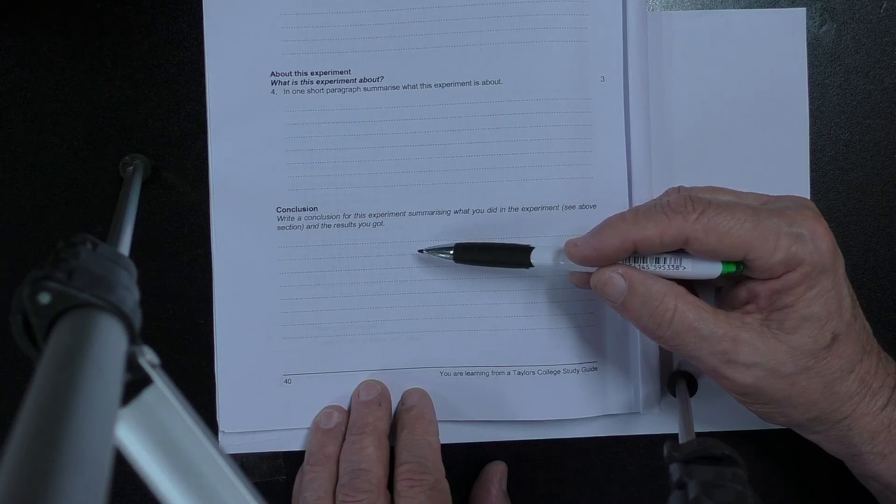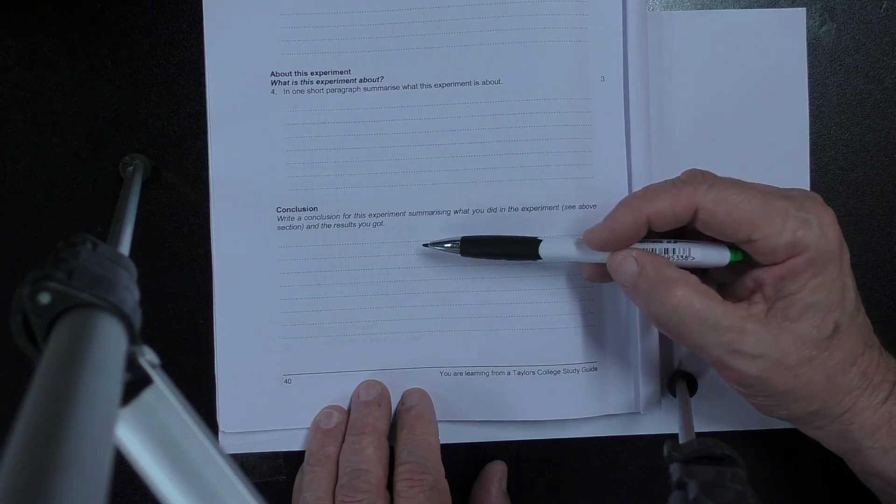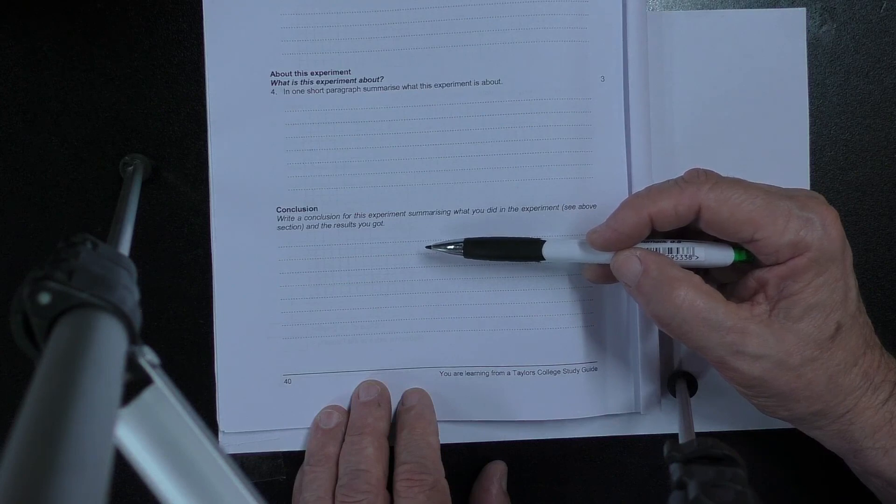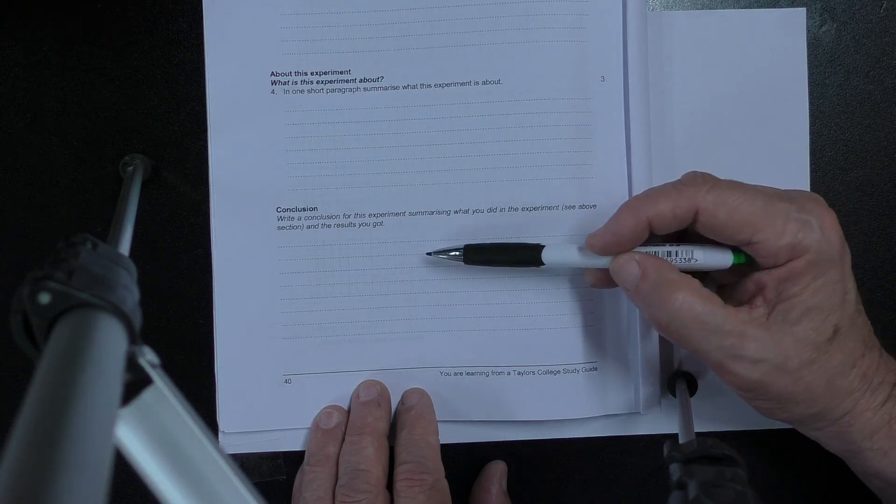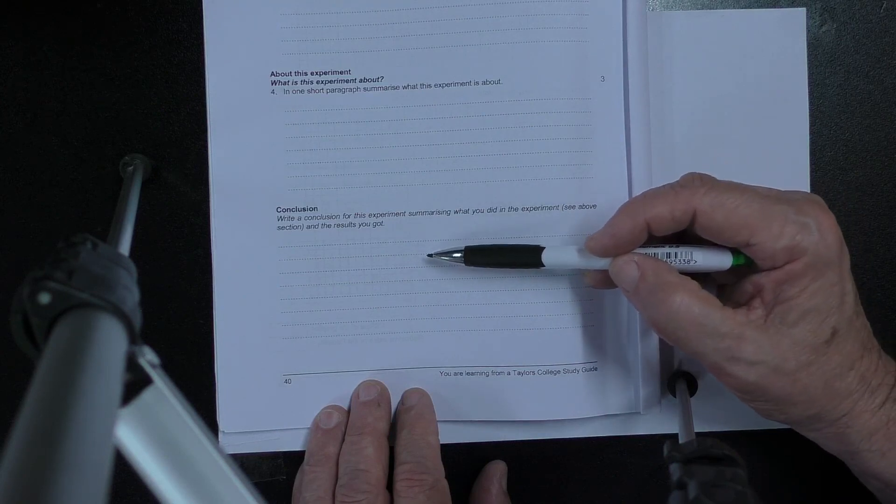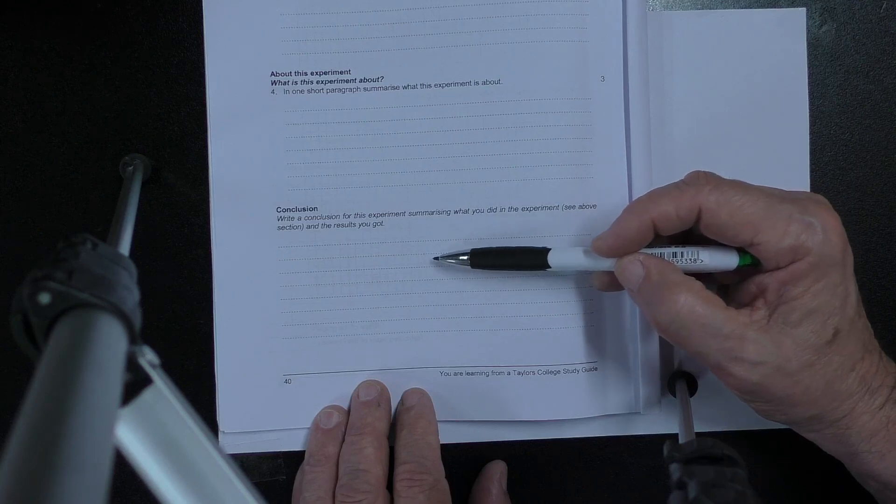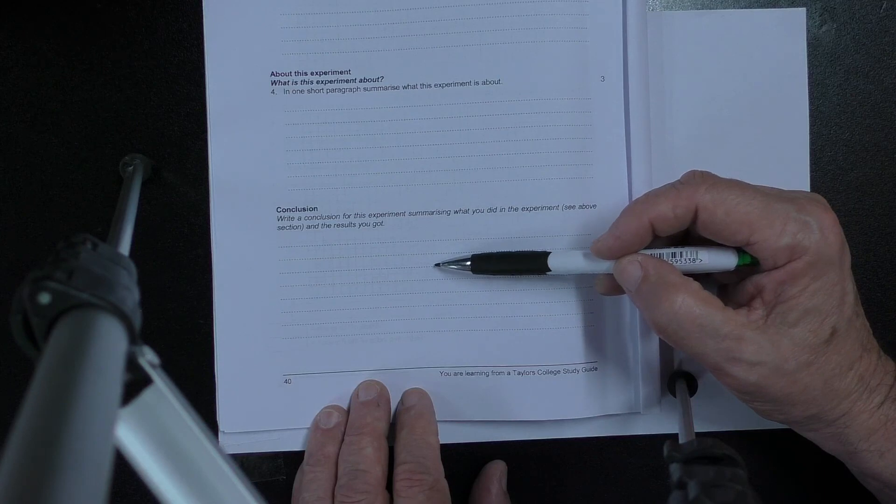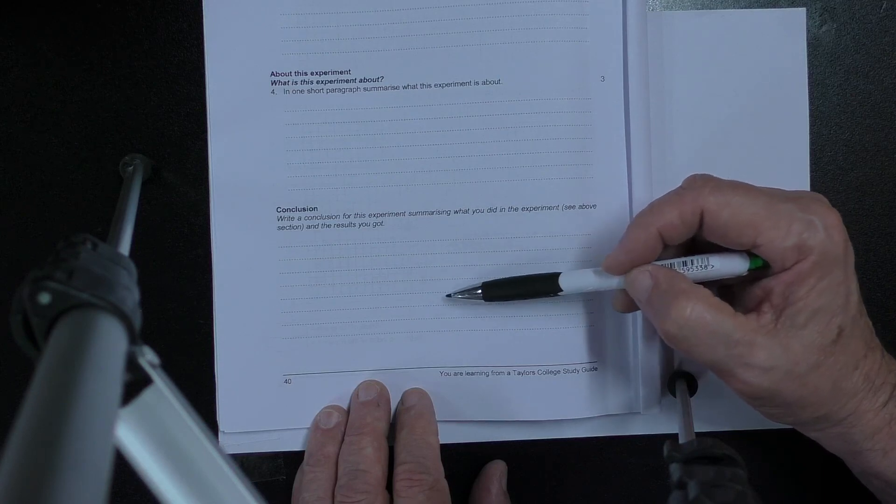So when you are writing your conclusion you should be able to say something about the ratio sin I to sin R. What did you find? And you should be able to relate that to Snell's law. That this is something that Snell worked out from his experiments, that this ratio was a constant.